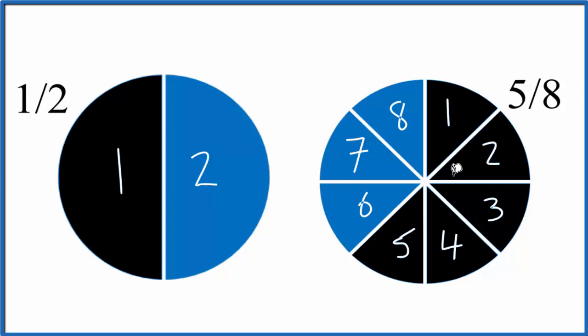If we look at this, we can see that the 5 eighths, that's bigger. It occupies more shaded area than the 1 half. So 5 eighths is a larger number than 1 half.